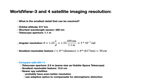So what is the smallest feature that can be resolved by WorldView-3 and 4 satellites? The orbital altitude is 617 kilometers. The shortest wavelength sensor works at 450 nanometers, and the size of the primary mirror is 1.1 meters. Therefore, the angular resolution, using the formula theta equals 1.22 times lambda over d, gives us: lambda is 450 nanometers, d is 1.1 meters, which gives an angular resolution of 5 times 10 to the negative 7 radians.